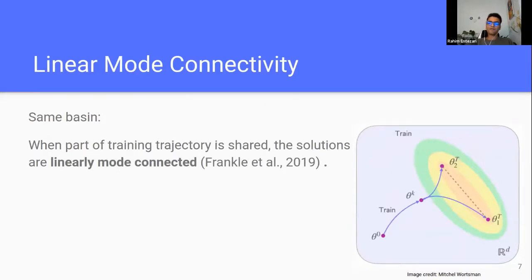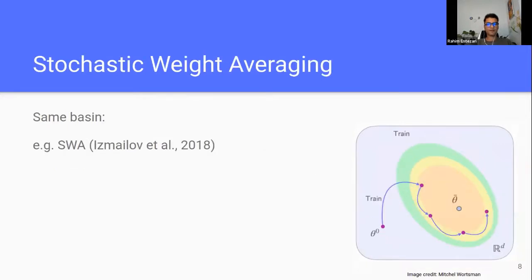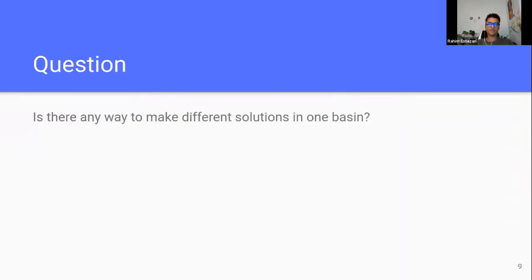There is also another related work: Jonathan showed that if we share some trajectory points up to epoch k, then we can branch and copy two models with different SGD orders. That's good because they end up in one basin. But the problem is that these solutions are not functionally diverse. Another related work is stochastic weight averaging, which starts from one initialization and saves checkpoints near convergence — those checkpoints reside in one basin, but they are also not functionally diverse.